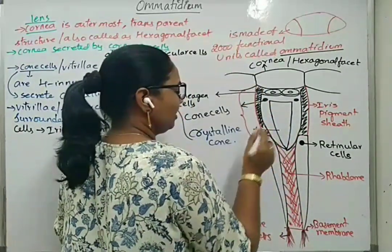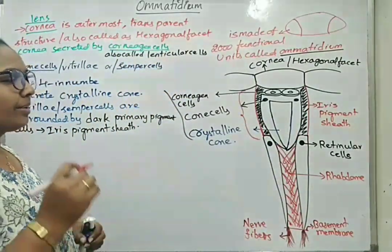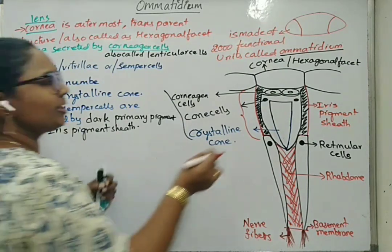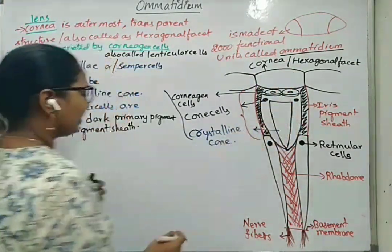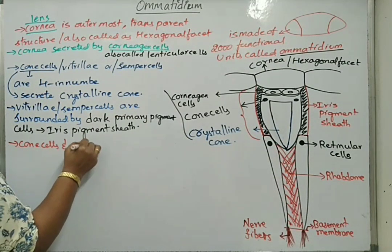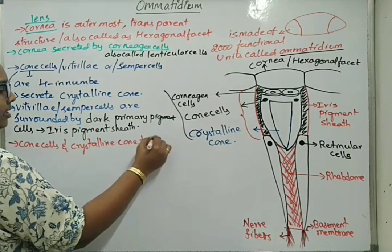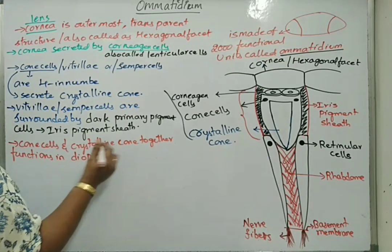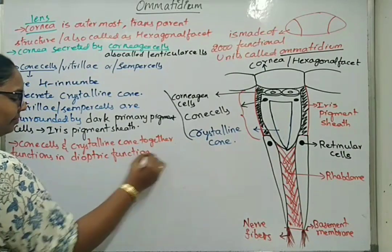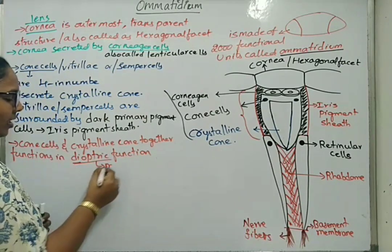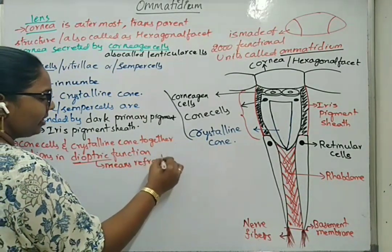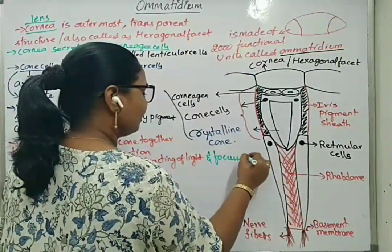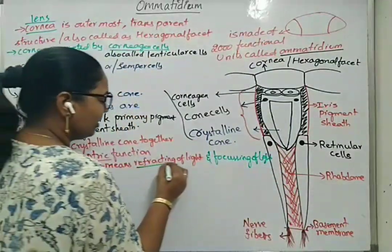Cone cells and crystalline cone are involved in focusing of light, absorbing of light, and refracting of light. Refraction means bending of light. Cone cells and crystalline cone together perform a dioptric function — meaning two functions: refracting of light and focusing of light.